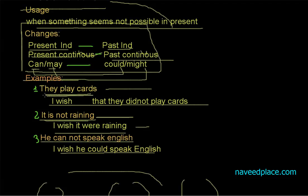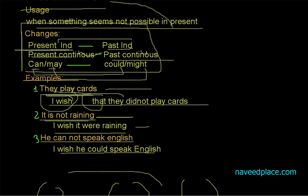If you don't know what present definite is, I suggest you go and watch my video on all tenses — present definite. So, for the example 'They play cards', which is present definite tense, we will use 'wish' followed by 'that' — though 'that' is optional, it is totally up to you whether to use it or not. Then we use 'they', and as per our changes, present definite becomes past indefinite, so we get 'I wish that they did not play cards.' You can see that 'did not' indicates it is past indefinite tense.